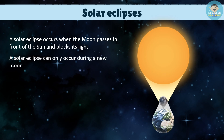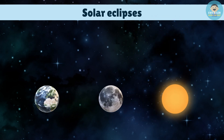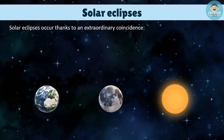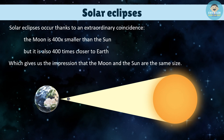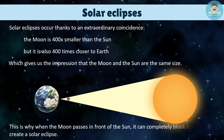A solar eclipse can only occur during a new Moon. Solar eclipses occur thanks to an extraordinary coincidence: the Moon is 400 times smaller than the Sun, but it is also 400 times closer to Earth, which gives us the impression that the Moon and the Sun are the same size. This is why, when the Moon passes in front of the Sun, it can completely block it and create a solar eclipse.